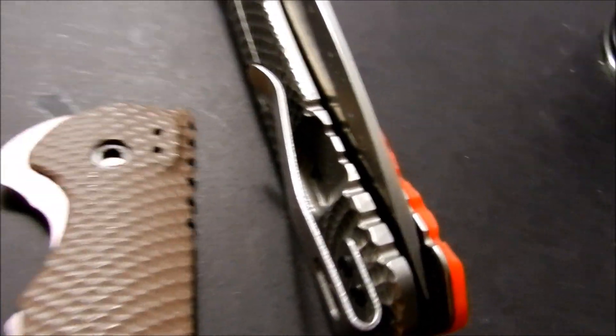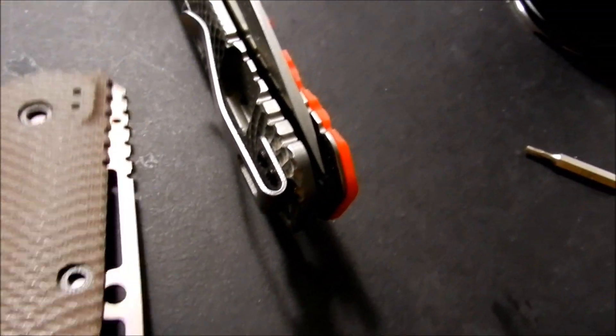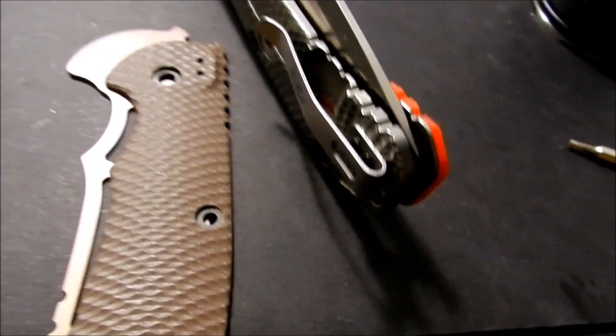Now all we got to do is anodize the titanium same bronze color. And anodize the clip. Should be looking very nice.